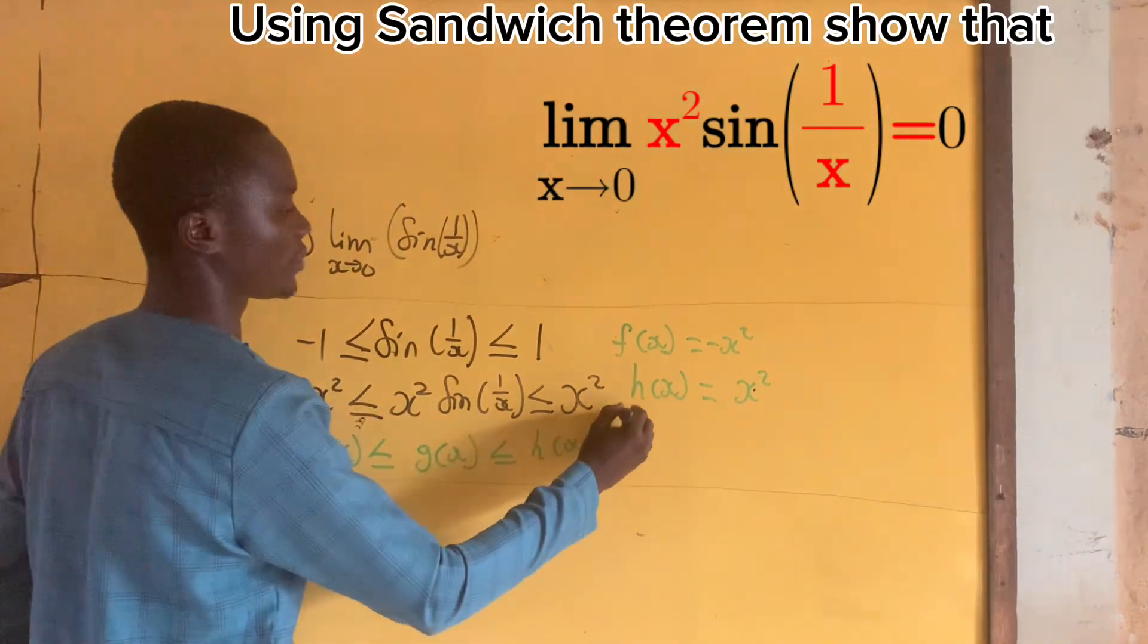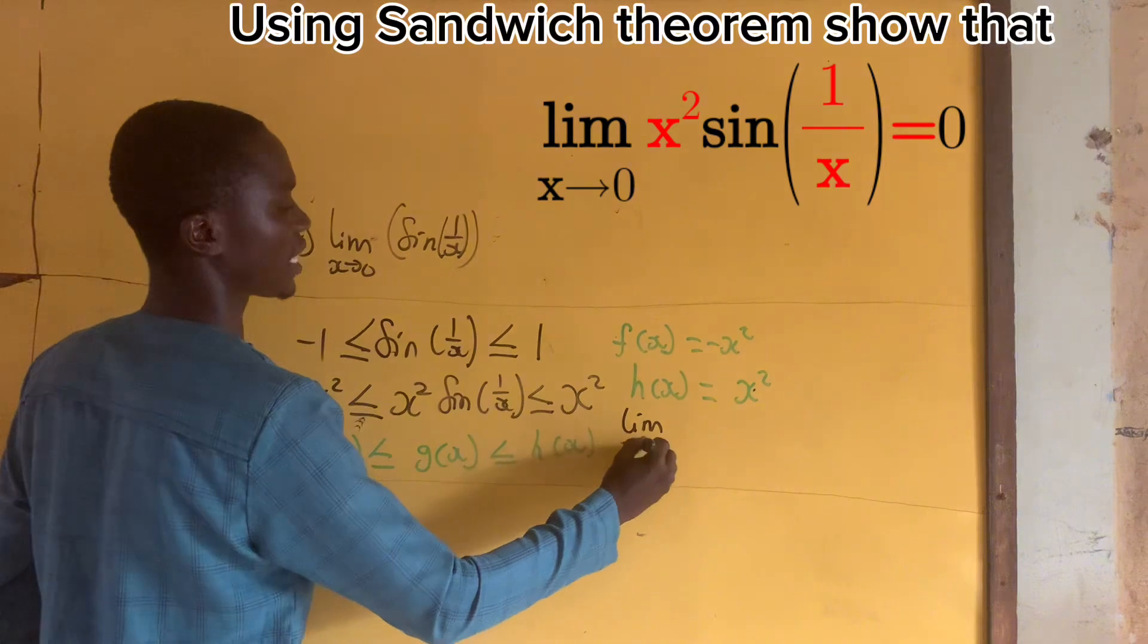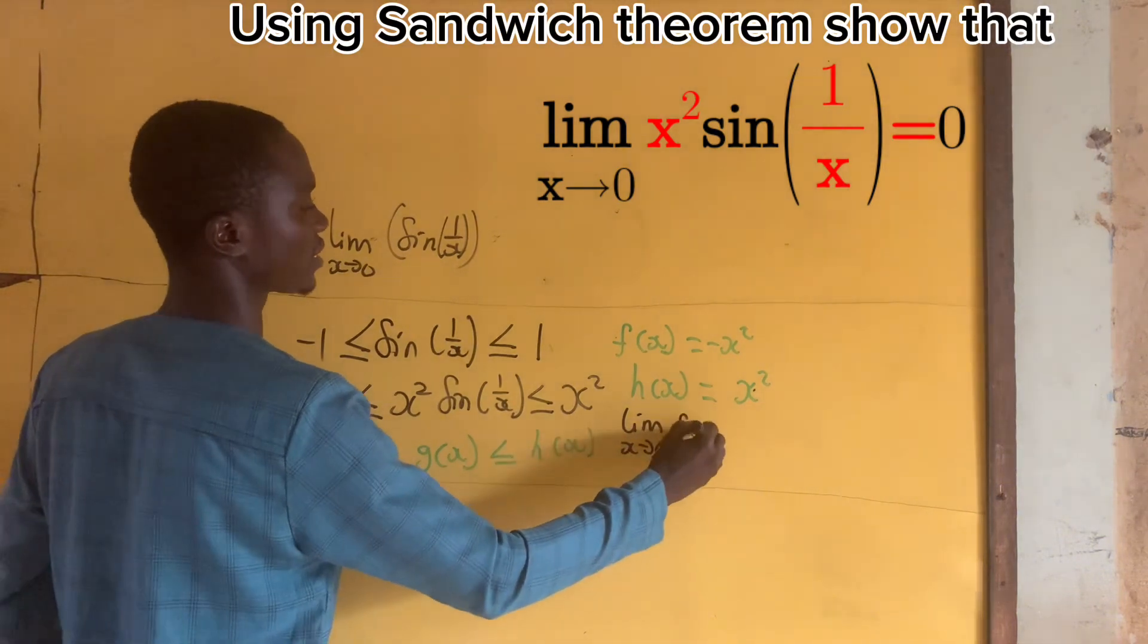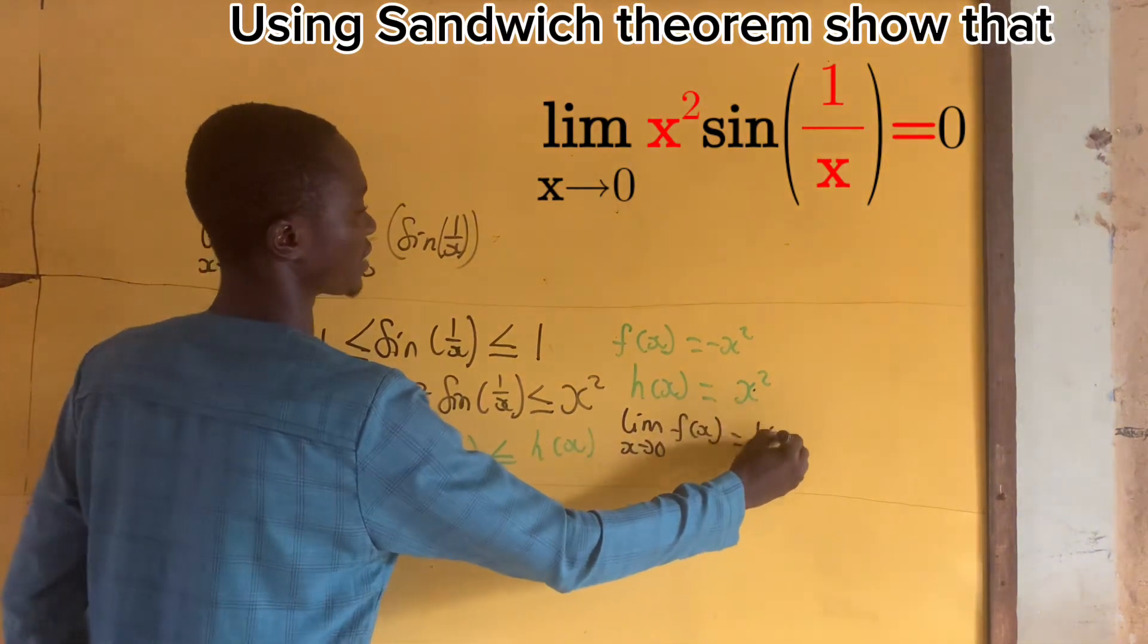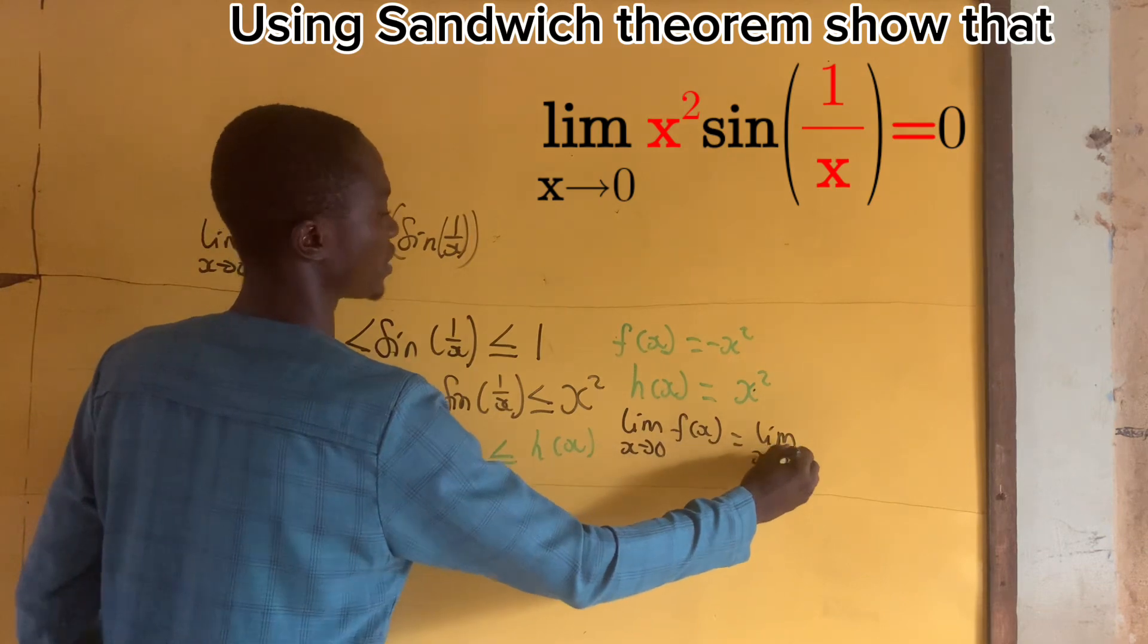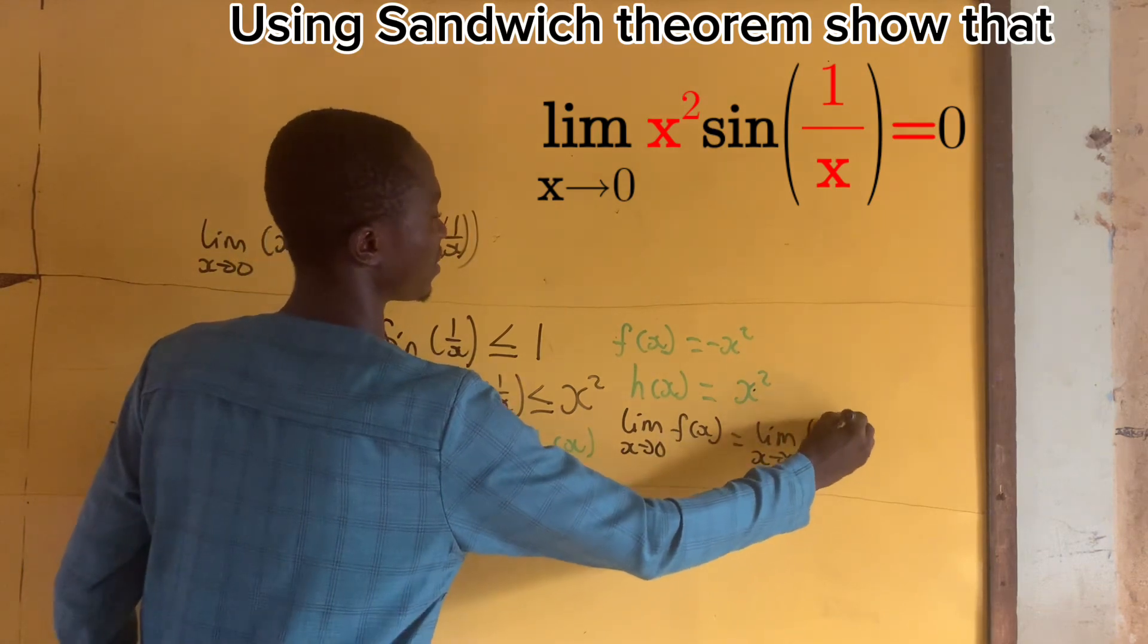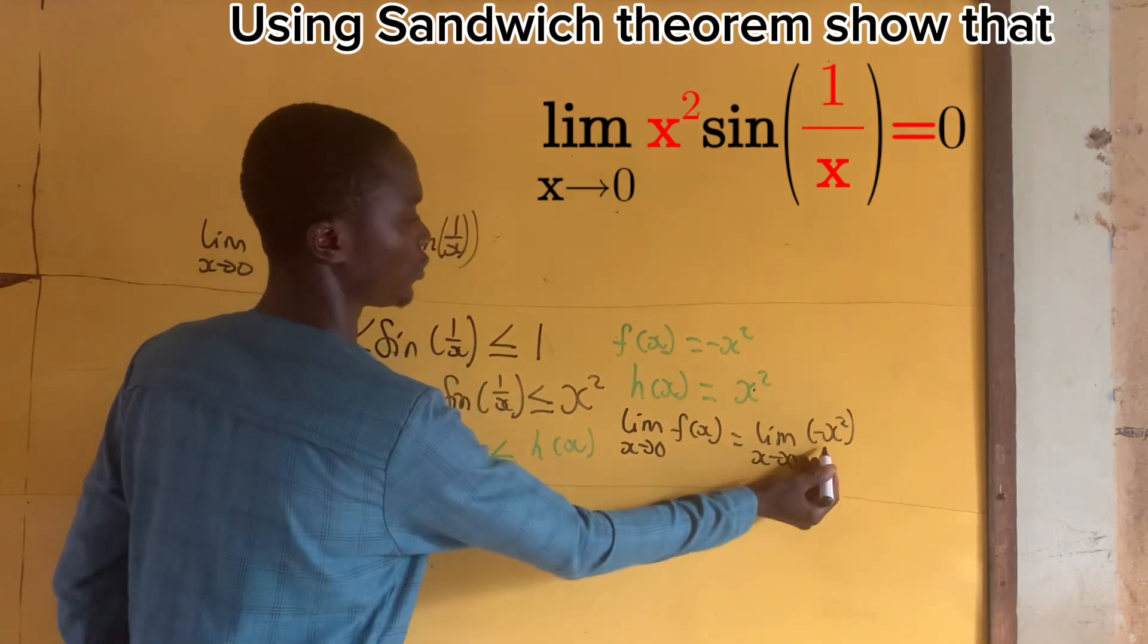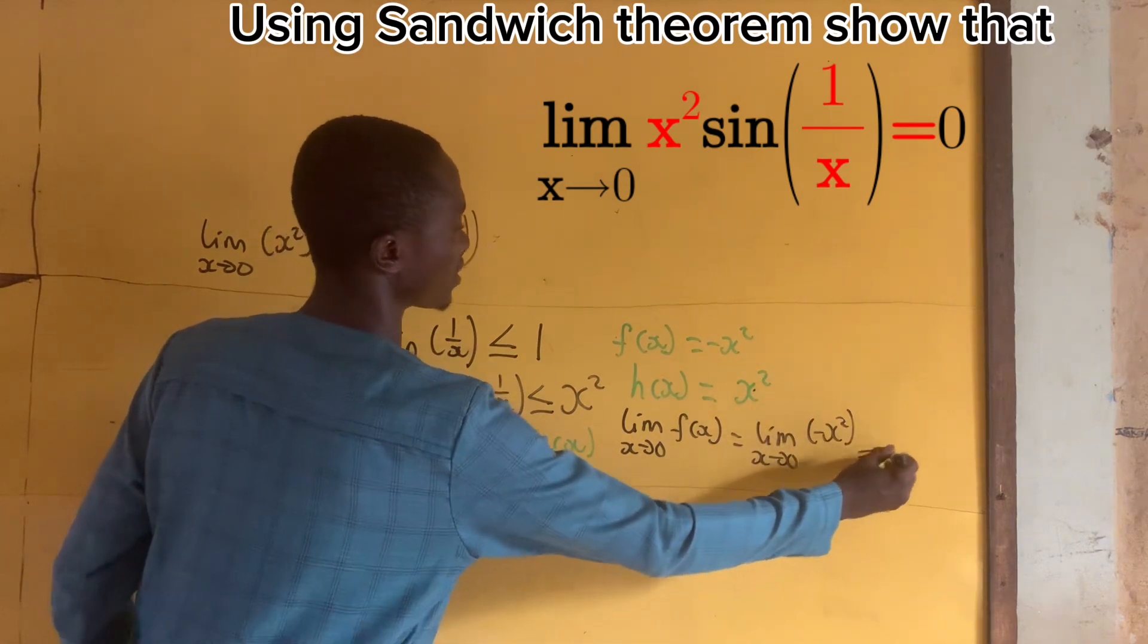So, let us take the limit as x approaches 0 of f(x). That will be the limit as x approaches 0 of -x². And if we put 0 here, this will give us 0.